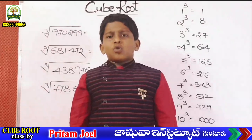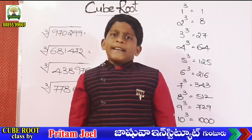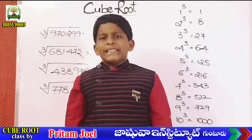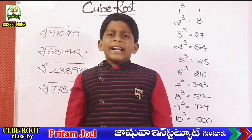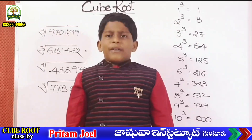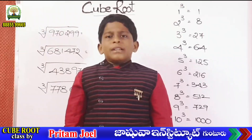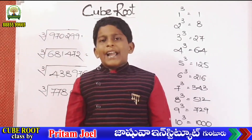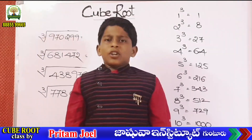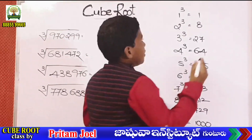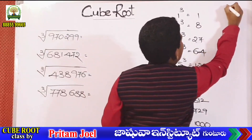6 cube is 216, 7 cube is 343, 8 cube is 512, 9 cube is 729, 10 cube is 1000. You need to remember these.